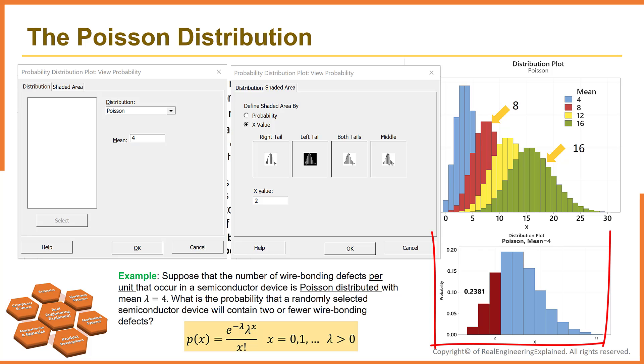Here is the result. There is 23.8% chance that semiconductor device will contain two or fewer wire bonding defects.